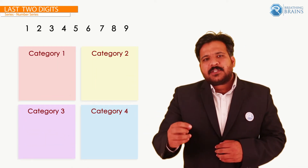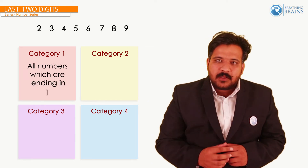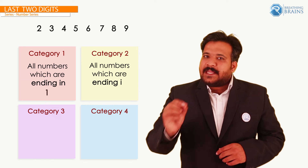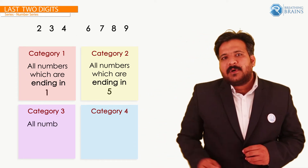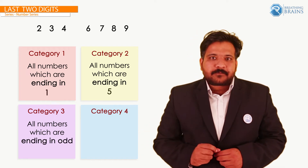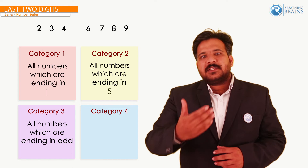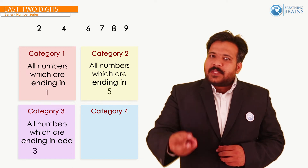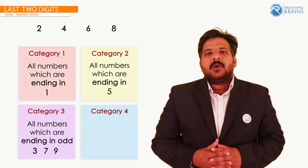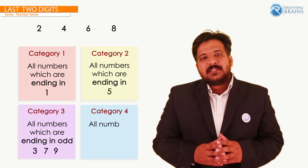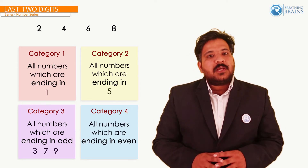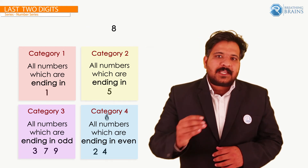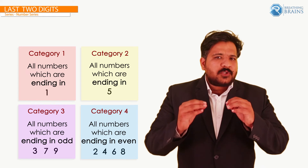To explain this concept in more detail, I have categorized it into four categories. The very first is all numbers ending in 1. The second is all numbers ending in 5. The next category is all numbers ending in odd digits — that means the number could be 3, 7, or 9. The last category is all numbers ending in even values like 2, 4, 6, and 8.